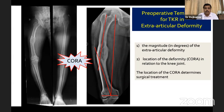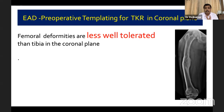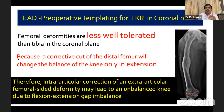As angular severity increases and CORA is in close proximity to the knee, the extent of soft tissue release needed increases along with the need for a constrained or hinged device. In this case, the femoral deformity in the coronal plane affects the balance only in extension — not in flexion — which is actually less well-tolerated than tibial deformity, which affects both flexion and extension gaps. In the literature, extra-articular deformity greater than 20 degrees in coronal plane or greater than 10 degrees in sagittal plane cannot rely on intra-articular correction.